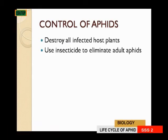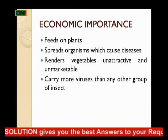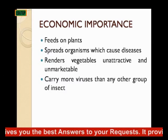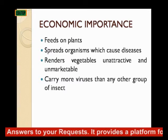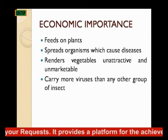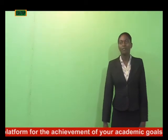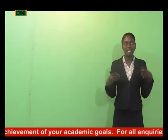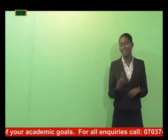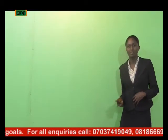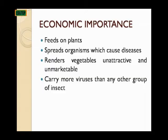To control aphids, destroy all infected host plants, and use insecticides to eliminate adult aphids. The economic importance of aphids: they feed on plants and destroy them; they spread organisms which cause disease; they render vegetables unattractive and unmarketable — piercing and causing holes so that nobody wants to buy the produce. They also carry more viruses than any other group of insects.